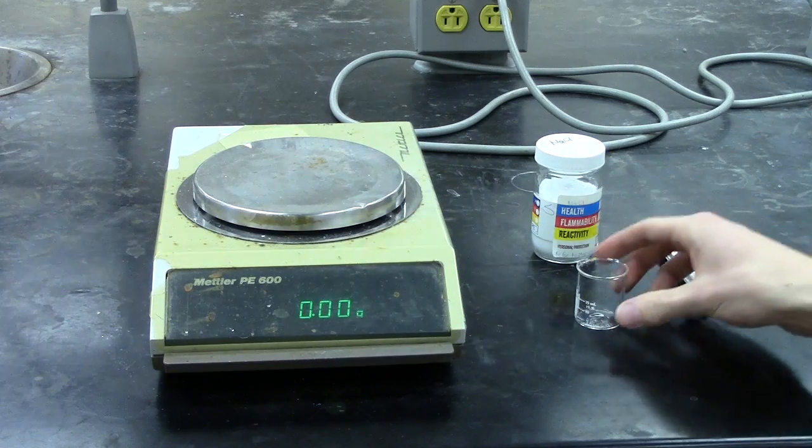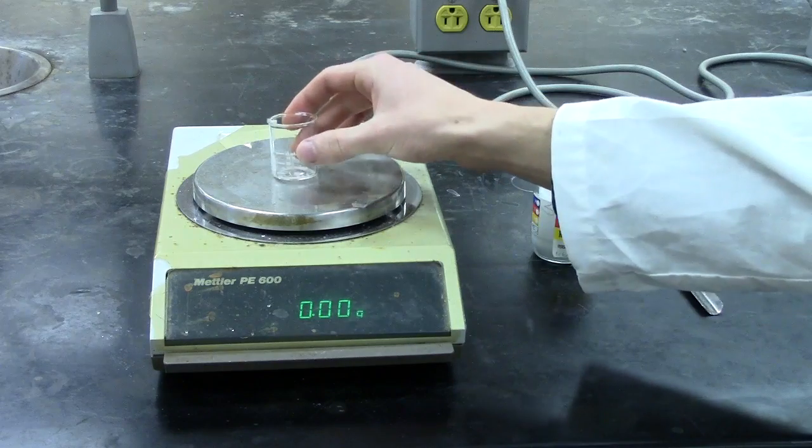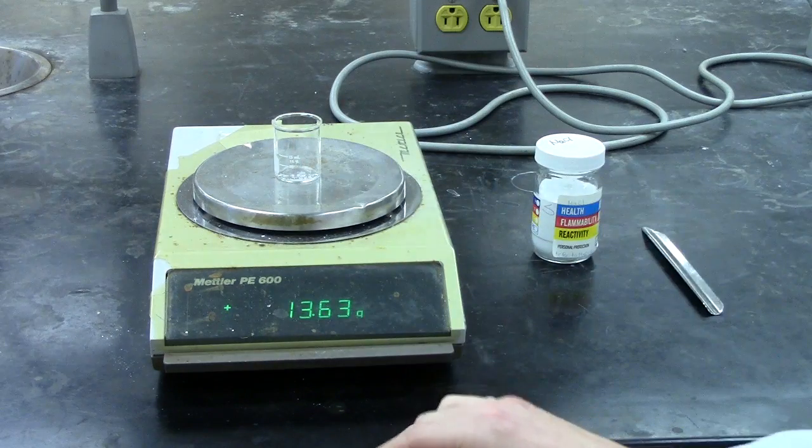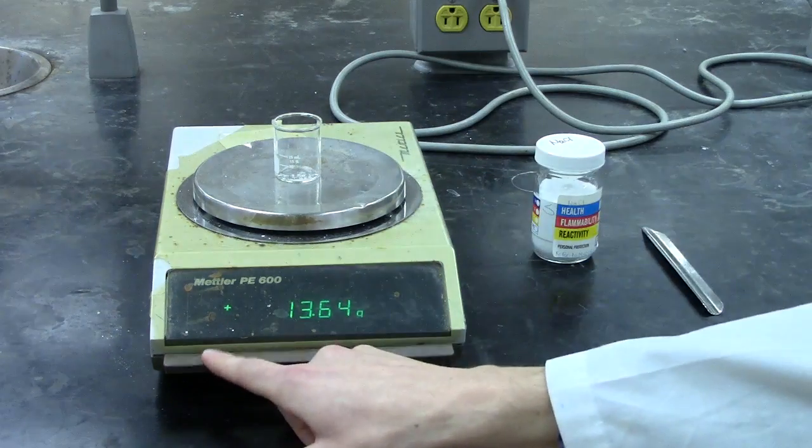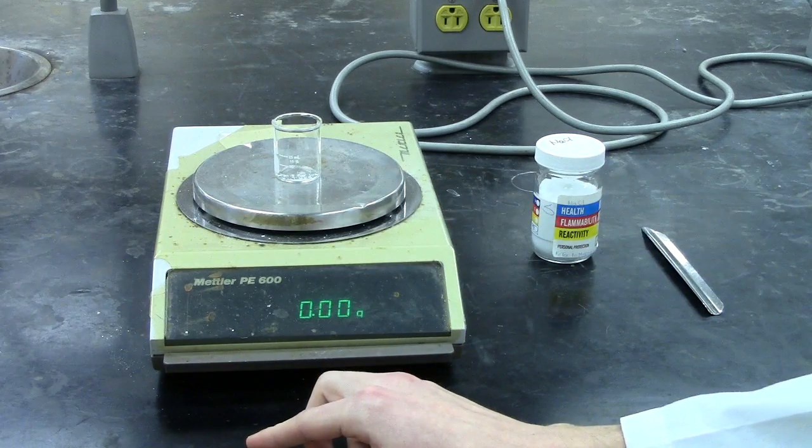Once you have your mass come up and if you are looking to measure in a particular vessel, you load your vessel and then press the tare button which brings you back to zero grams.